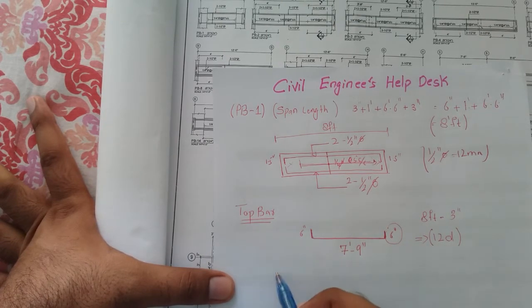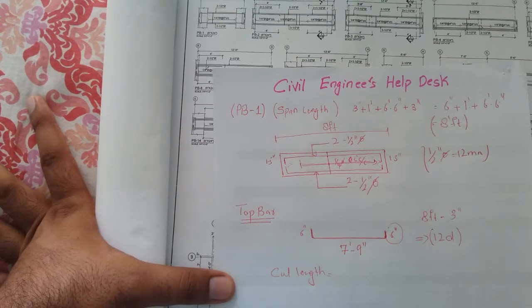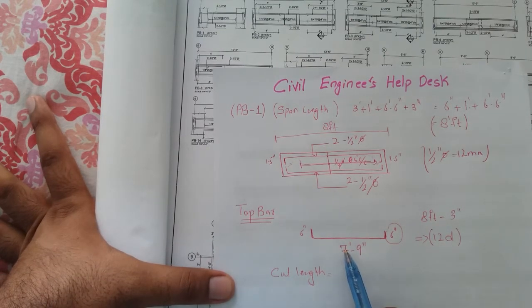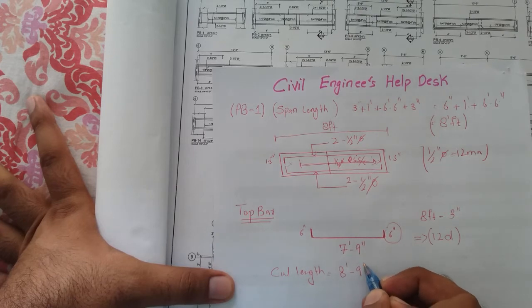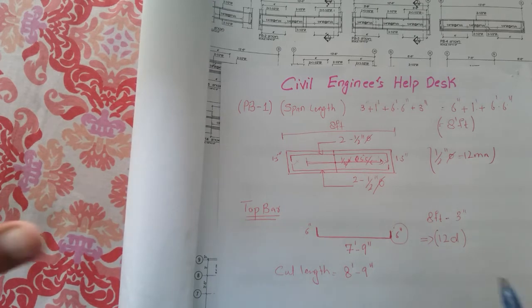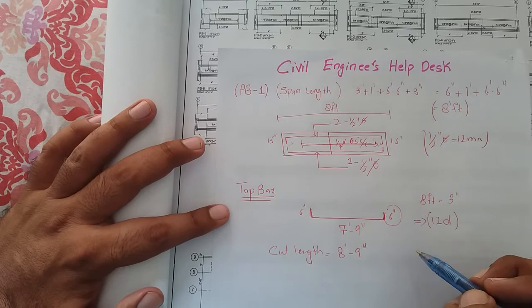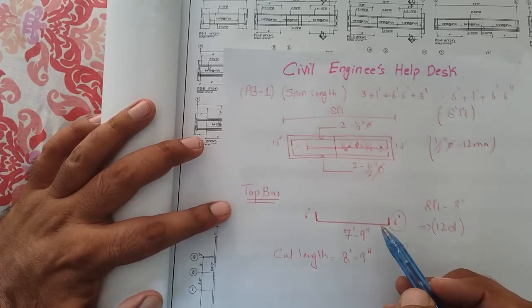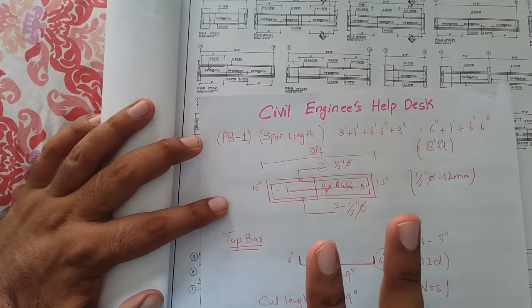We now need the cut length, which is what we tell the steel fixer to cut. The straight length is 7 feet 9 inches, plus 6 inches L on one side plus 6 inches L on the other side, which adds 1 foot. So the cut length is 8 feet 9 inches. The steel fixer cuts a straight bar of 8 feet 9 inches, then bends 6 inches on each end. The number of bars is 2, as mentioned in the diagram.